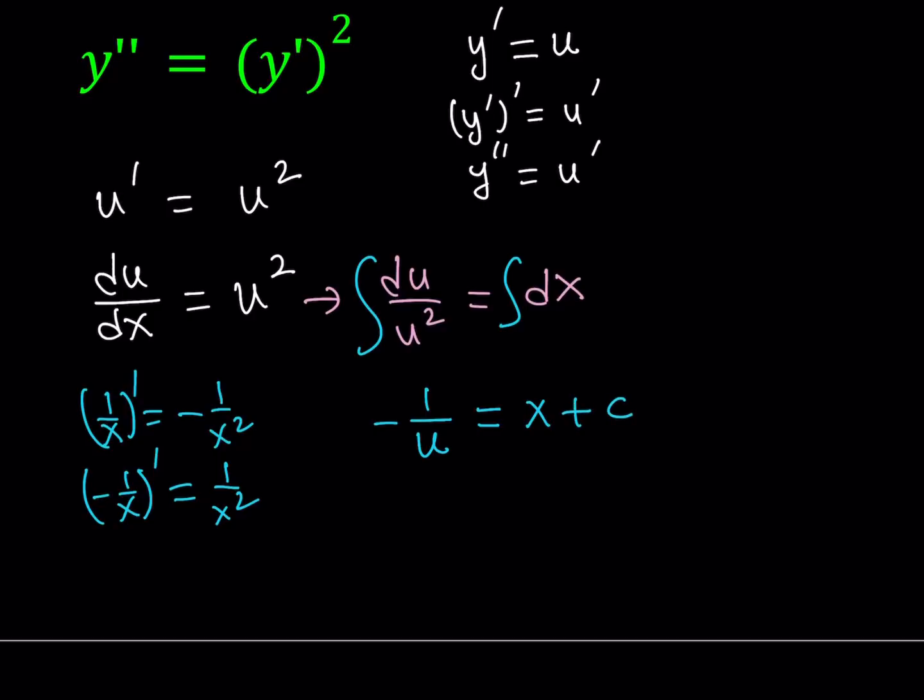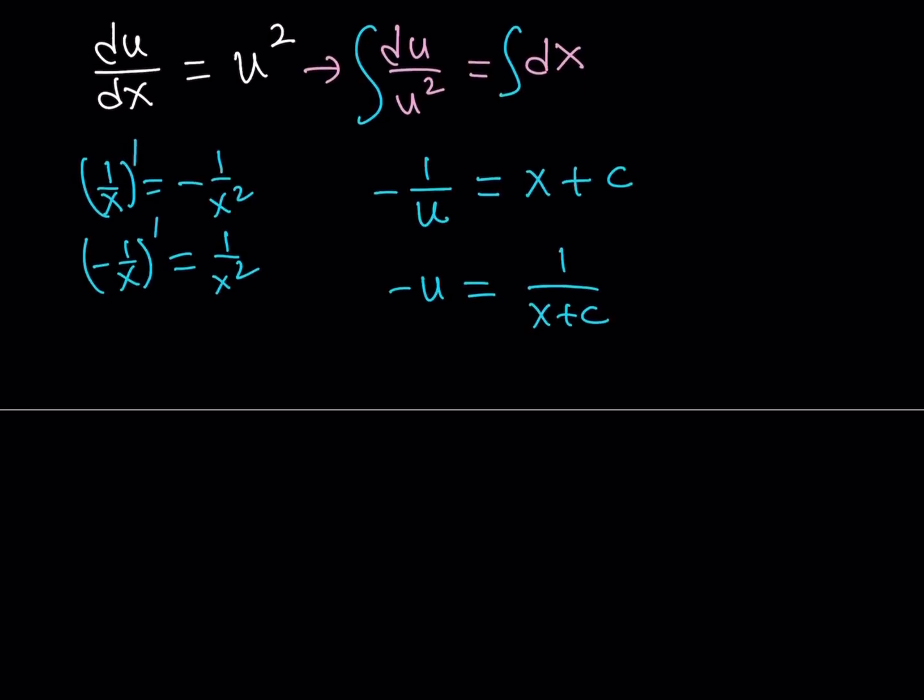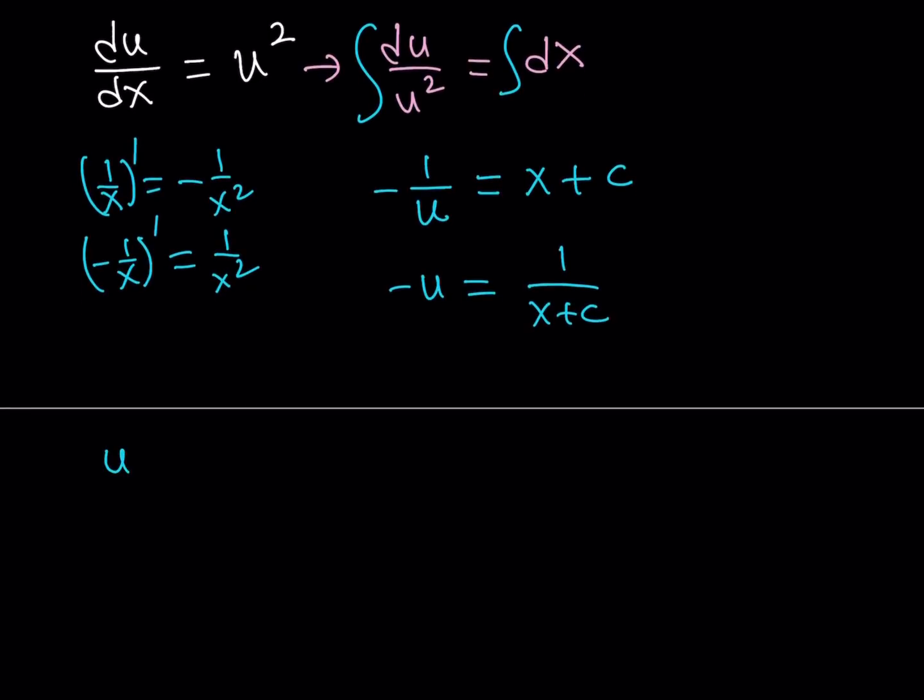Now obviously here we're trying to solve for u, so let's go ahead and flip both sides. So in other words, if you take the reciprocal, you get negative u equals 1 over x plus c, and then by negating both sides, in other words multiply both sides by negative 1, you get u equals negative 1 over x plus c.